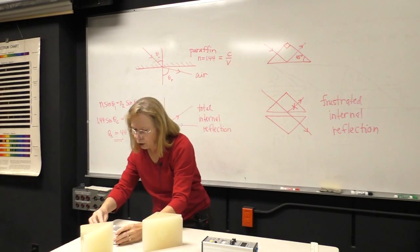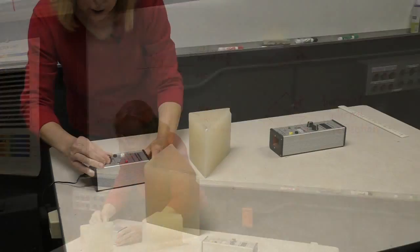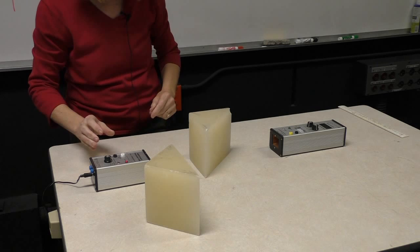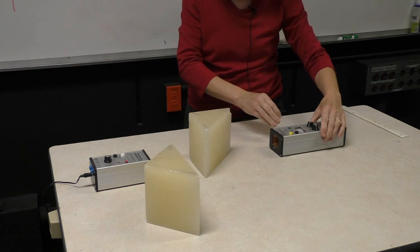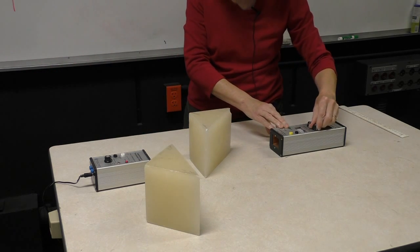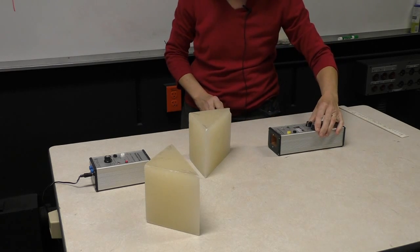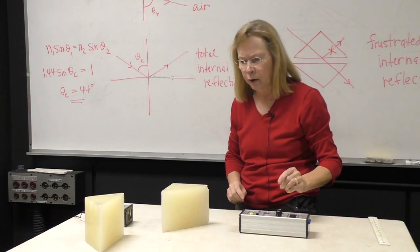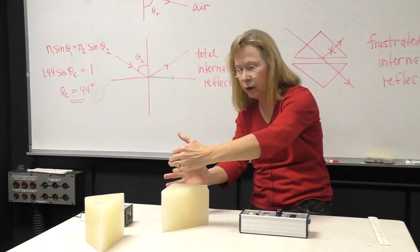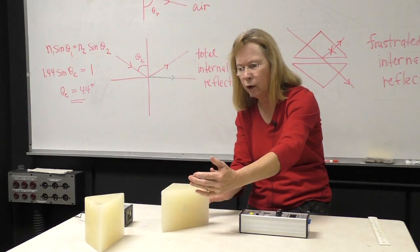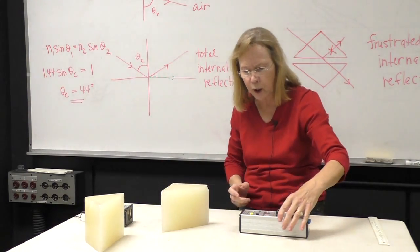So I'm going to turn on the transmitter and I'm going to modulate it at a kilohertz because that's a frequency which we can hear very easily. And you can hear a little bit of signal here. I'm going to get some diffraction of that electromagnetic energy around the prism as well.